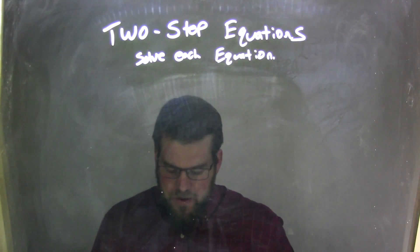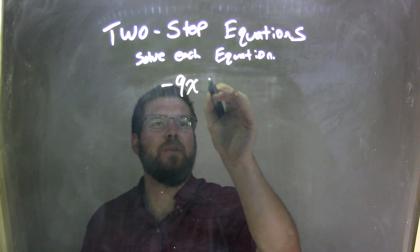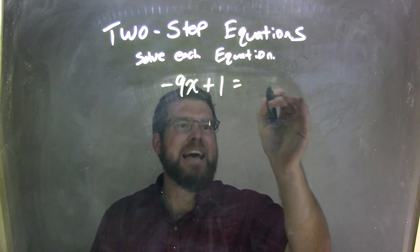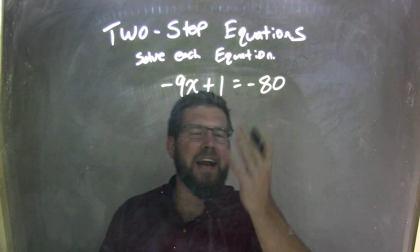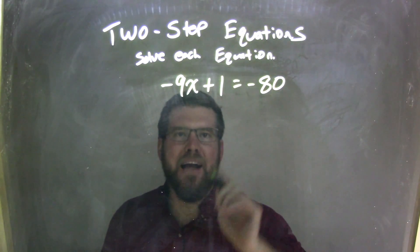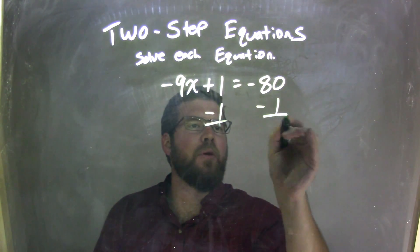So if I was given this equation, negative 9x plus 1 equals negative 80. Well, my first step here is that plus 1, I need to get rid of that. Opposite of addition is subtraction, so I subtract 1 from both sides.